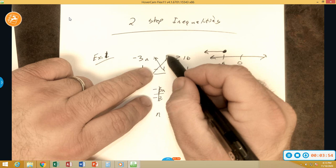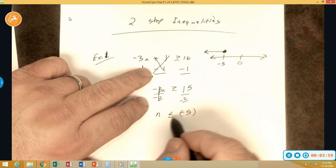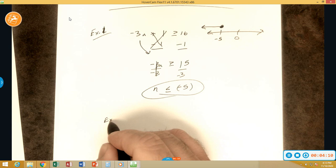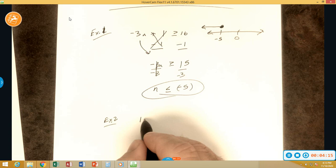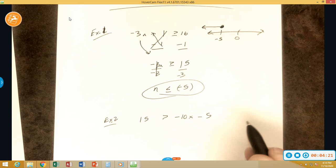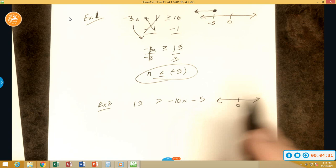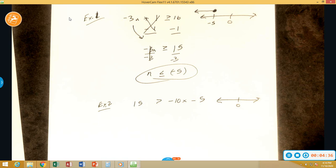Okay, so what happens if we have a problem like this? 15 is greater than negative 10x minus 5. What do we do in this case? It's all weird and it looks weird. You can either solve it from this, or you can do like I always do: I always like my variable being as far left as possible. So what I'm going to do is I'm going to take negative 10x minus 5 and I'm going to put it on the left. I'm going to put 15 on the right.